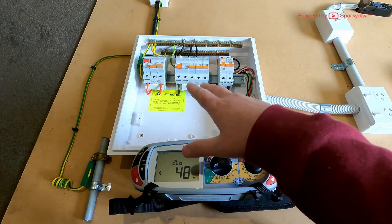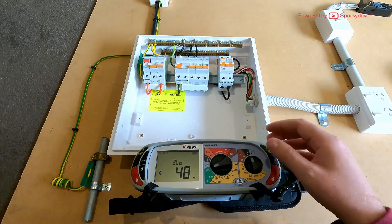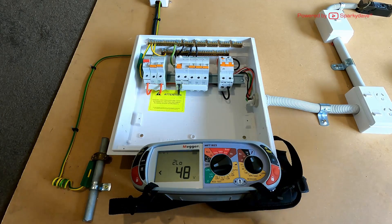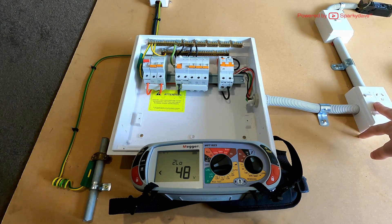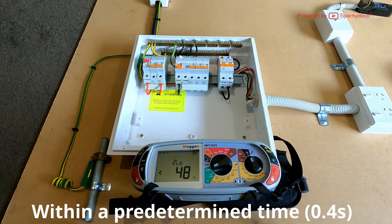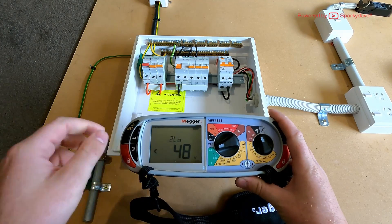When we're doing these tests, we want to do one at the switchboard to ensure that the circuit protection is going to work under fault conditions. Then we do our second test at the furthest socket from the installation to ensure that the longest path has an impedance low enough to operate the circuit protection under fault conditions.